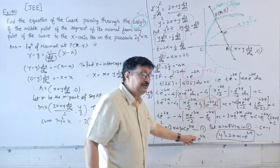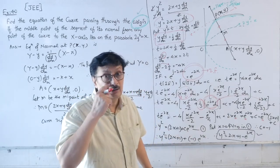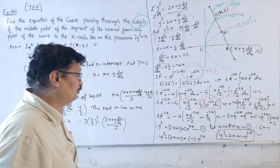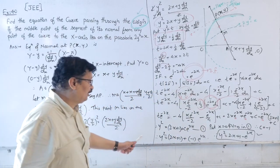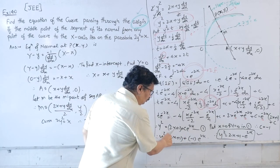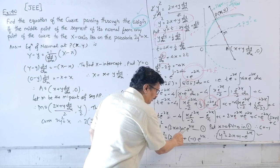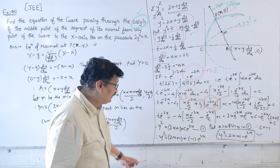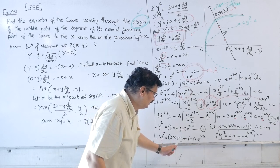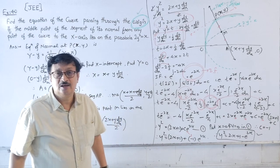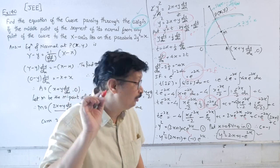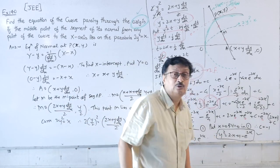This is the general solution, but we want the particular curve passing through the origin. Substituting x = 0, y = 0: 0 = 1 + c, so c = −1. Therefore the particular solution is y² = 2x + 1 − e^(2x).